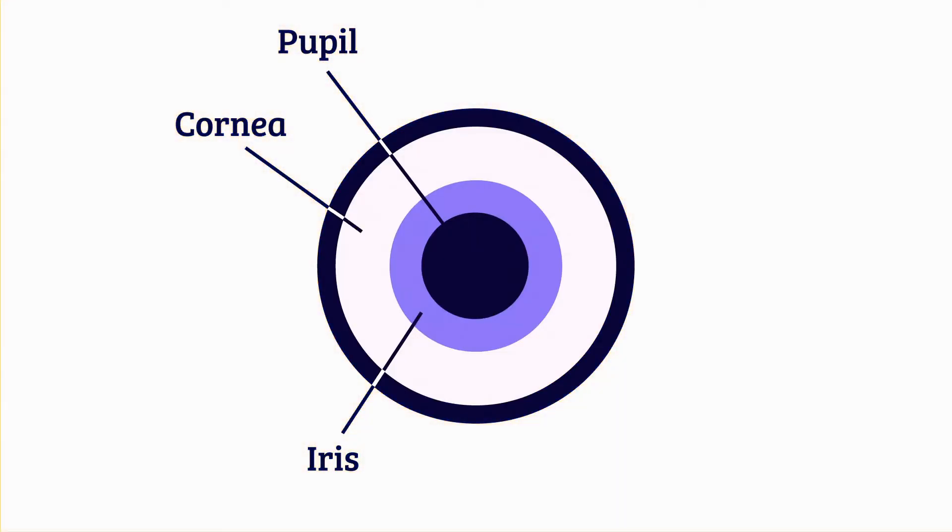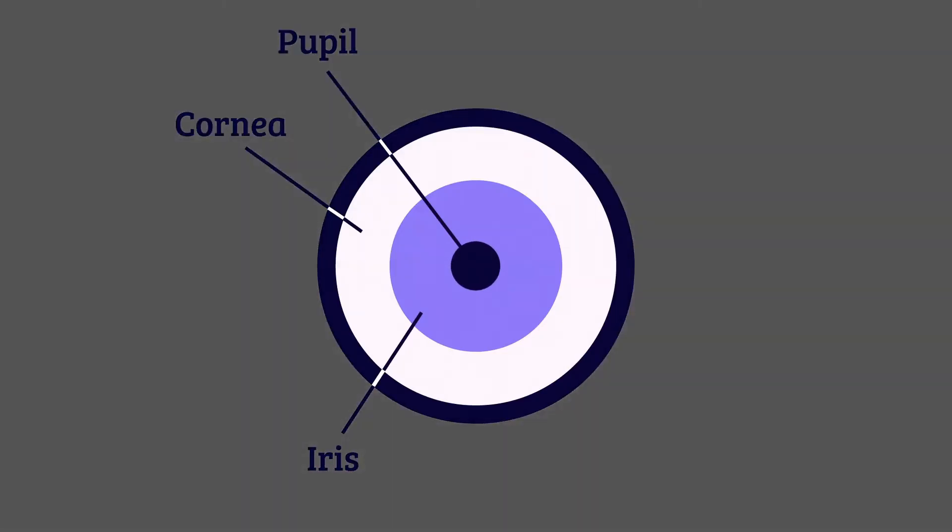In bright light, the iris narrows the pupil, reducing the amount of light that enters the eye. In dim light, the iris widens the pupil to let in more light. All of this happens automatically.